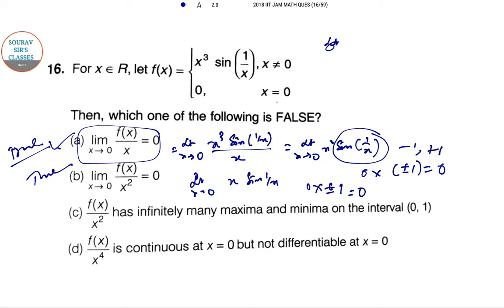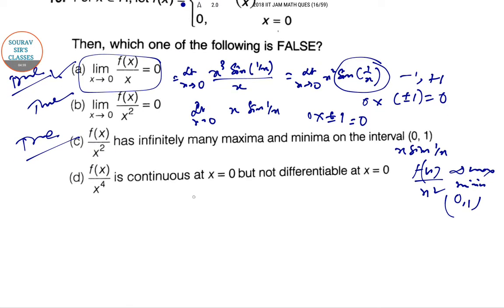Again, if you go for the third one, f(x)/x² gives x·sin(1/x), which has infinitely many maxima and minima on (0,1). So this is also true. Hence by the rule, obviously D has to be our correct answer. We can also check it. For f(x)/x⁴, this becomes sin(1/x)/x, and this limit as x → 0 does not exist. So D is false. Our correct answer is option D.